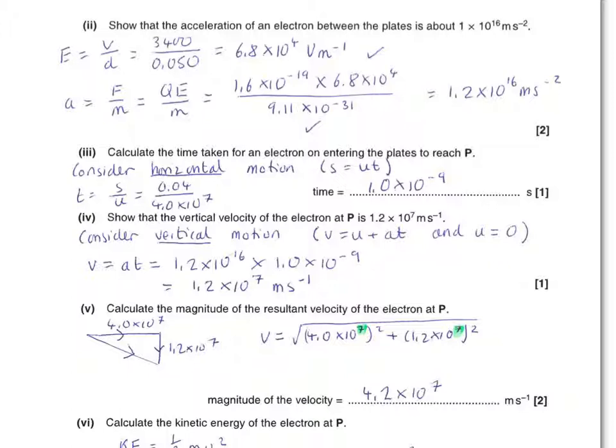So, the next part of the question asks us to show that the acceleration is a given value. The acceleration will depend on the force, but the force will depend on the field strength. So, we actually first have to work out the electric field strength. Note, I have selected E equals V divided by D. There are three equations for E on the datasheet. You need to know that this one is relevant for parallel plates. Then, just substitute in the potential difference and the separation of the plates. And you will achieve the first mark of the electric field strength.